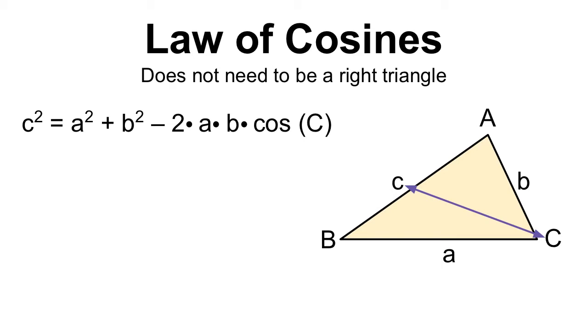A and B are really interchangeable. It doesn't matter which side length you label as A and which side length you label as B. The key is knowing that the angle that you have is opposite from one of the side lengths and making sure that you get those set up together.